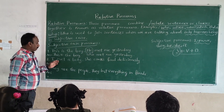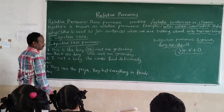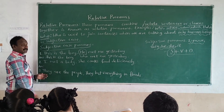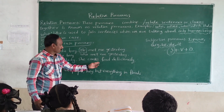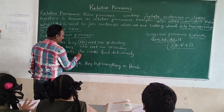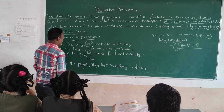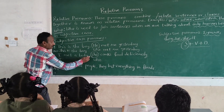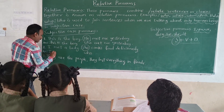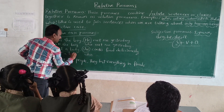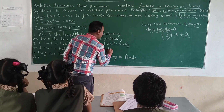Now the second one — you have to tell me: 'I met a lady. She cooks food deliciously.' Here 'she' is a subjective pronoun, so in the place of 'she' we use 'who'. Since they are in the subject position, we have to use 'who'. Answer: 'I met a lady who cooks food deliciously.'